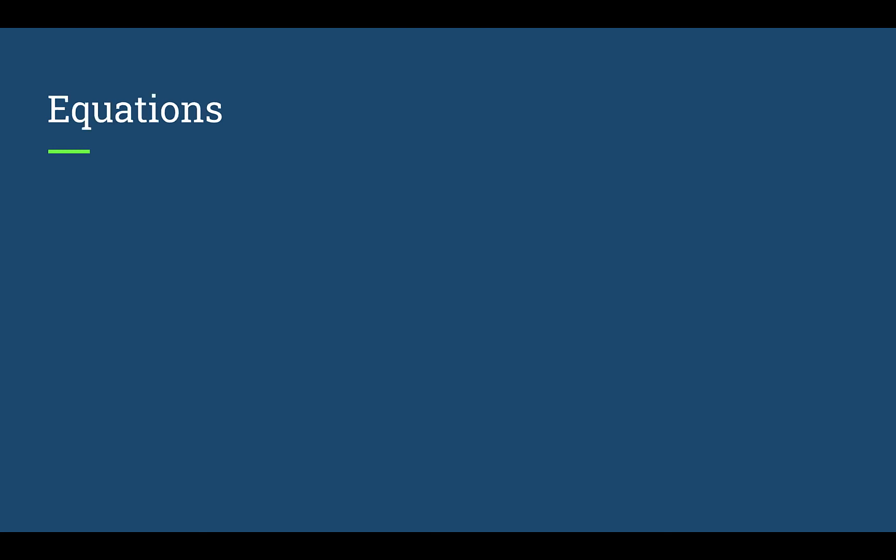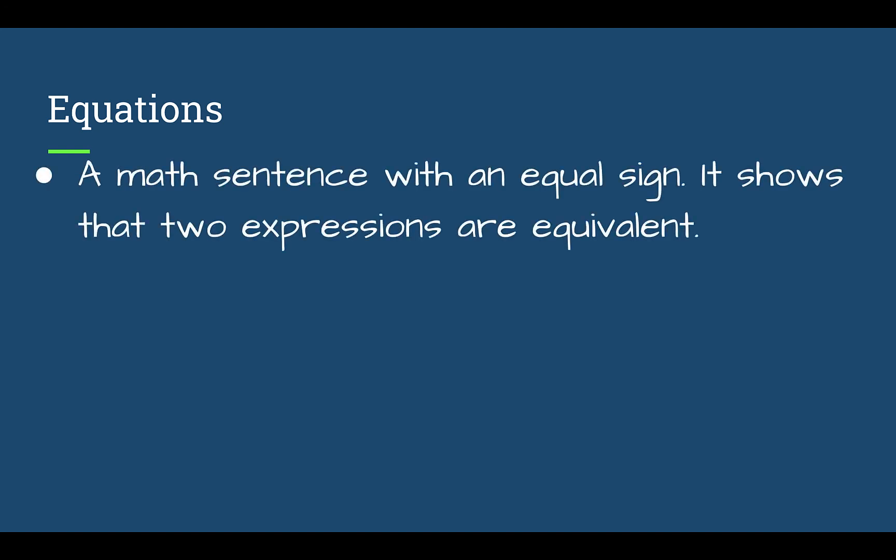Now let's look at another vocab word. We have equations. So equations are different than expressions because they have an equal sign. Okay. It shows that two expressions are equivalent or equal. Okay. So we have an expression on one side of the equal sign and an expression on the other. Those two things are equal.